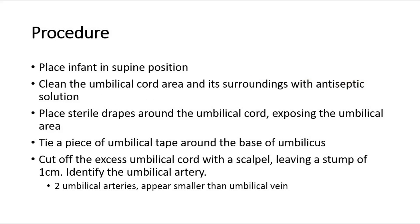For the procedure, place the infant in supine position. Clean the umbilical cord area and its surroundings with antiseptic solution. Place sterile drapes around the umbilical cord, exposing the umbilical area. Next, tie a piece of umbilical tape around the base of the umbilicus. Cut off the excess umbilical cord with a scalpel, leaving a stump of 1 cm.